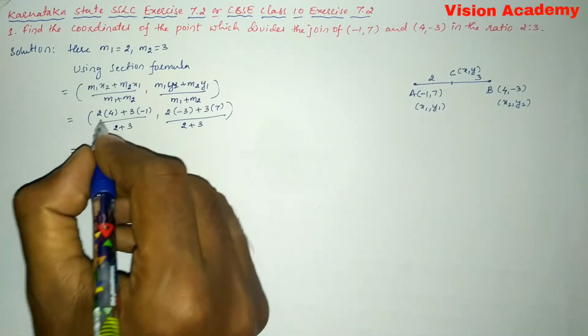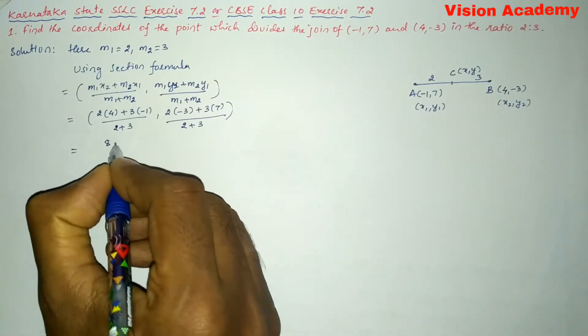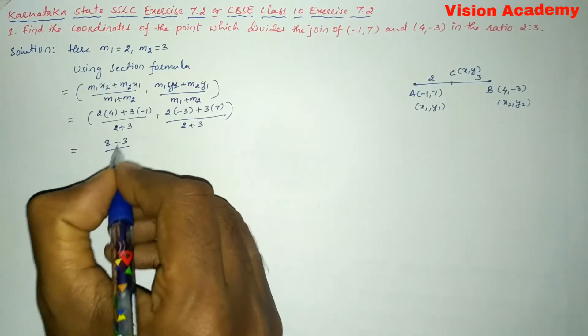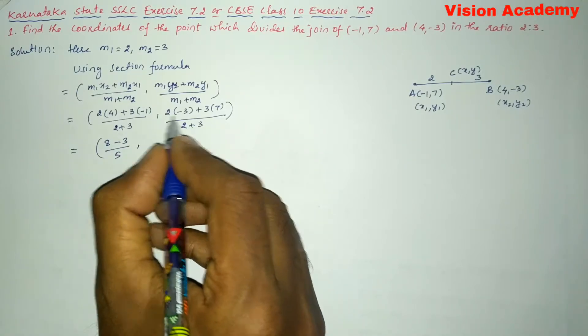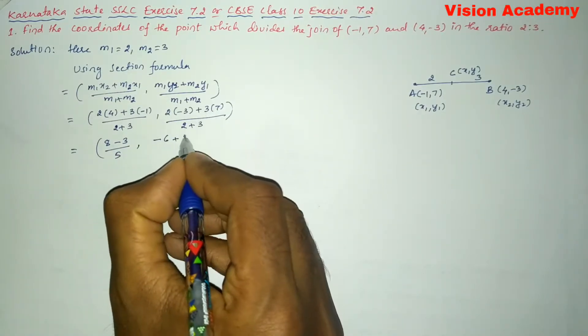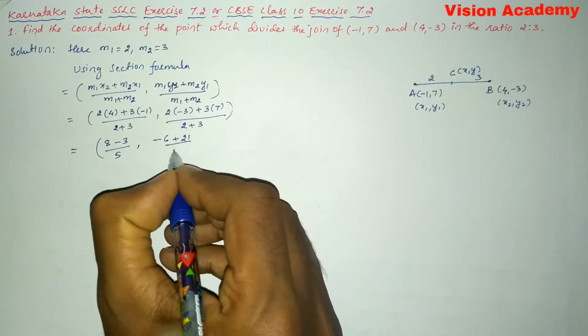Now, let us further simplify: 2×4 is 8, 3×(-1) is -3, divided by 2+3 is 5. 2×(-3) is -6 plus 3×7 is 21, divided by 2+3 is 5.